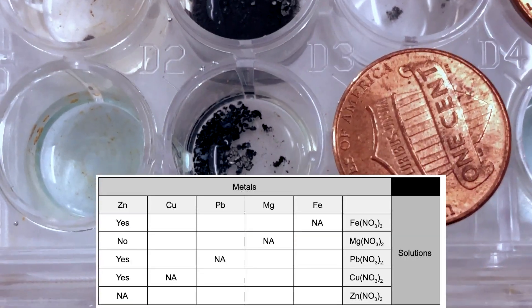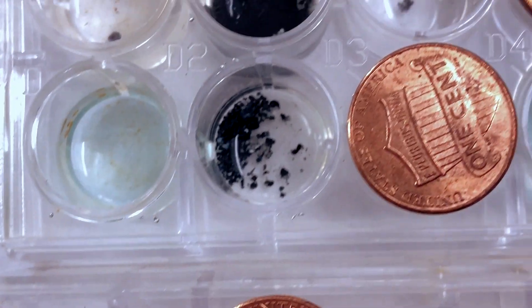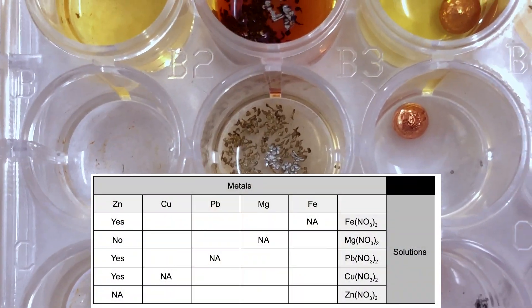The zinc and the lead, very much a color change. The gray zinc became black. Likewise, in the copper solution, the gray of the zinc became black. So those are the outcomes, the only thing it did not react with was magnesium.